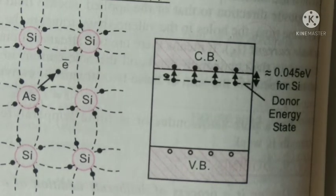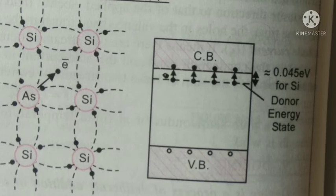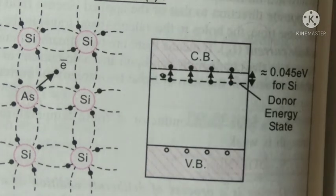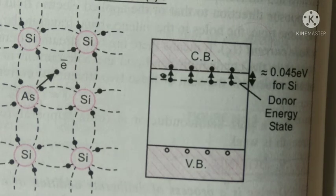...nearly 0.03 electron volts corresponding to thermal energy of the electrons at room temperature, excites these electrons from donor energy state to the conduction band. And due to it, conductivity of semiconductor is very much improved.